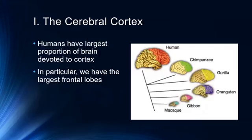Humans have the largest proportion of brain devoted to cortex. In particular, we have the largest frontal lobes, which seem to be important for planning and coordinating for the future, devoted to complex muscular movements, and some of our linguistic abilities. Some people also think that our consciousness seems to be located there as well, but there's a lot of controversy about that.